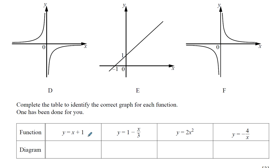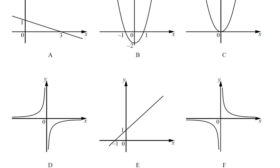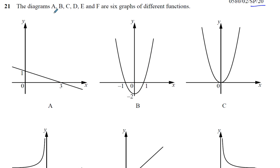Now, y equals x plus 1, this is a linear graph. It means it's going to be a straight line. It's in the form y equals mx plus c. So the gradient of this graph is 1, and the y-intercept is also 1.